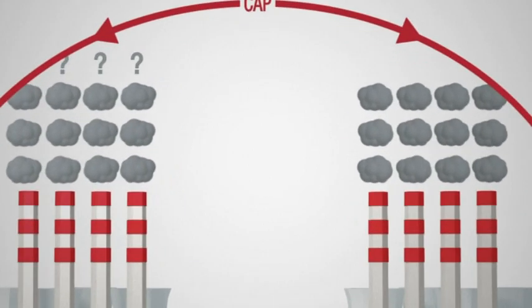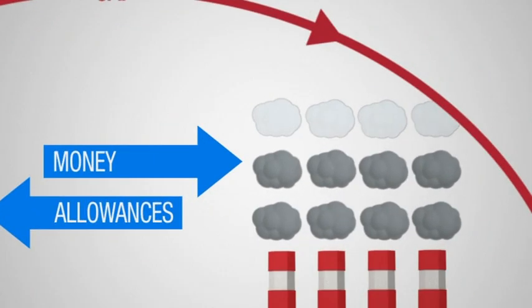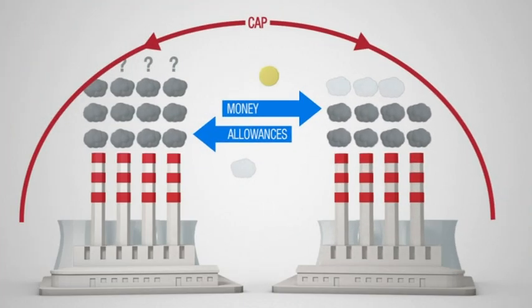Don't have enough? Cut your emissions, or buy extra allowances from another emitter. Have extra allowances? Keep them for next year, or sell them. This flexibility ensures that emissions are cut where it costs the least to do so.